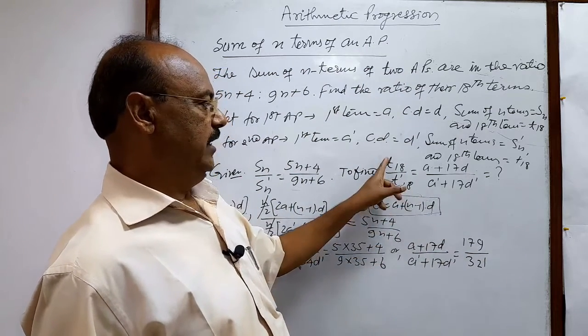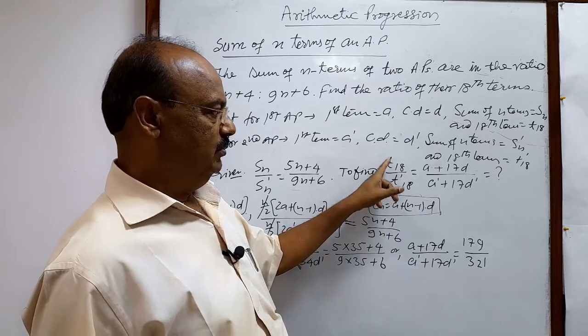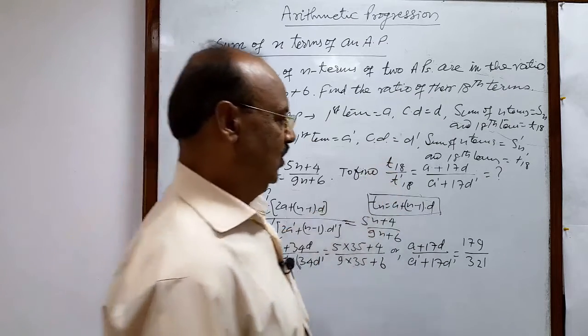And what is a plus 17d by a dashed plus 17d dashed? This is t18 by t dashed 18, means ratio of their 18th term.